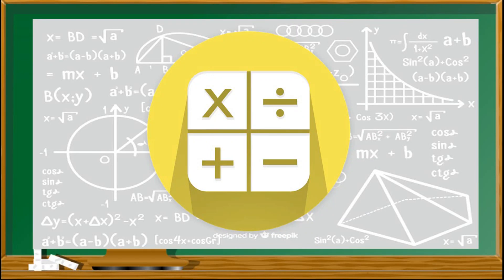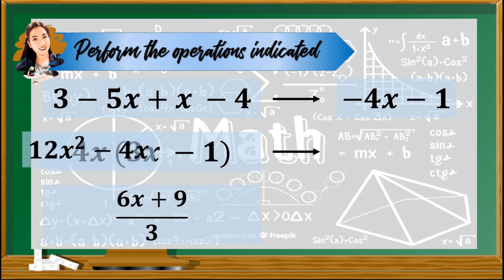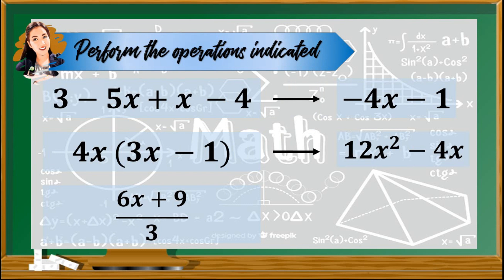Do you still remember the different fundamental mathematical operations? To check that, let us try to perform the indicated operations on the given algebraic expressions. You may pause the video so you could try to answer the following items. Let's check our work. For item number 1, we just have to combine like terms, so the answer is negative 4x minus 1. Item number 2, we need to get the product of 4x and 3x minus 1, and the answer is 12x squared minus 4x. And item number 3, we need to divide 6x plus 9 by 3, and the quotient is 2x plus 3.